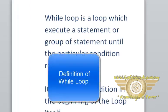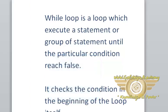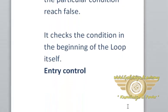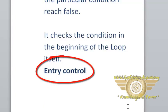While loop is a loop which executes a statement or group of statements until the particular condition reaches false. It checks the condition at the beginning of the loop itself. So, we can call the while loop as an entry control loop.